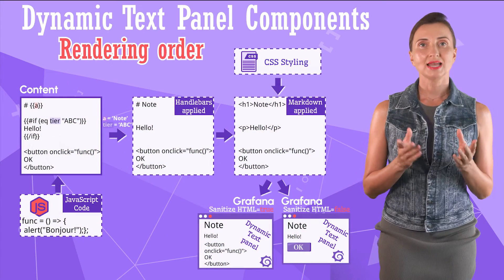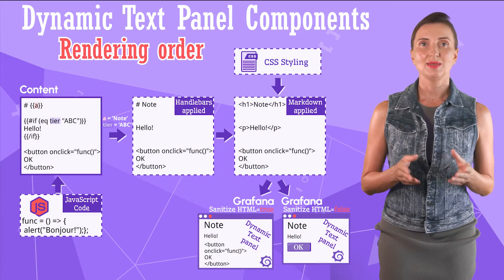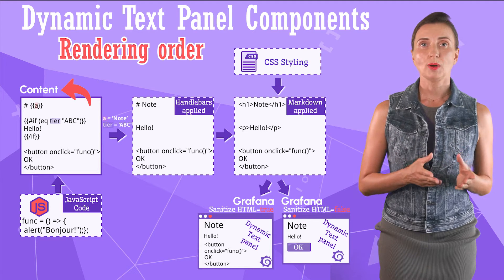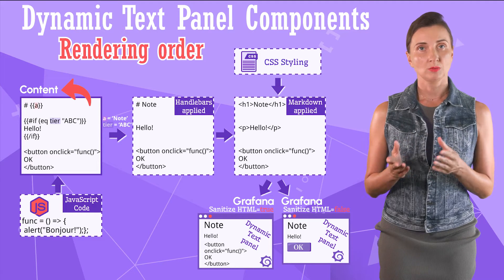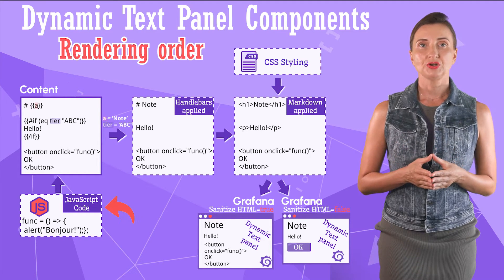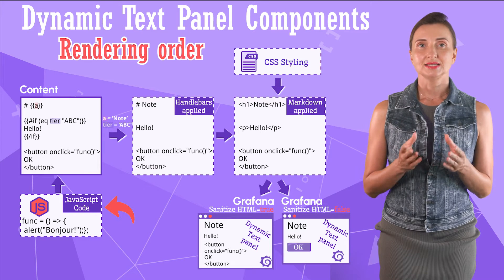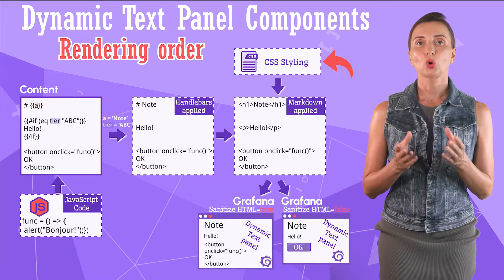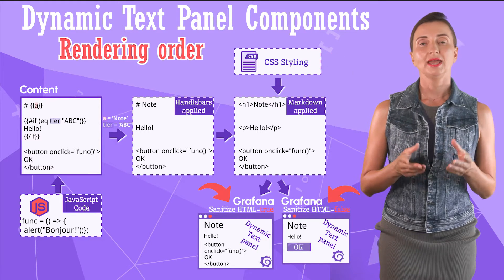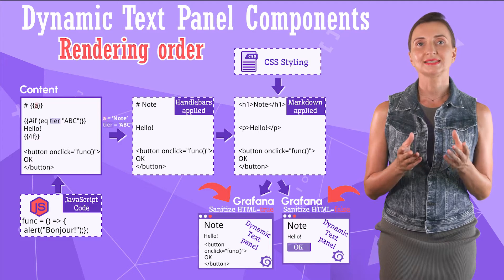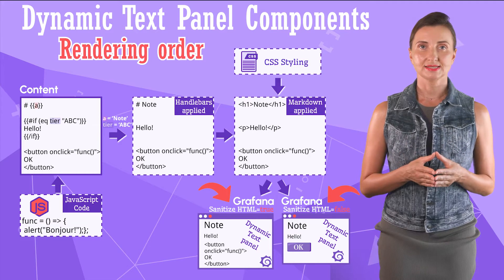This schema depicts the essence of the Dynamic Text plugin. You have the content with Handlebars, HTML, and Markdown. The JavaScript area describes actions. CSS styling is applied after all that. And the final look and functionality depend on the sanitizing setting.